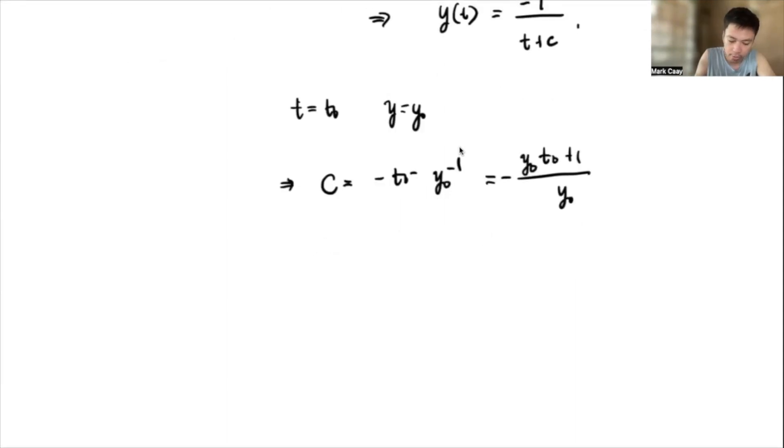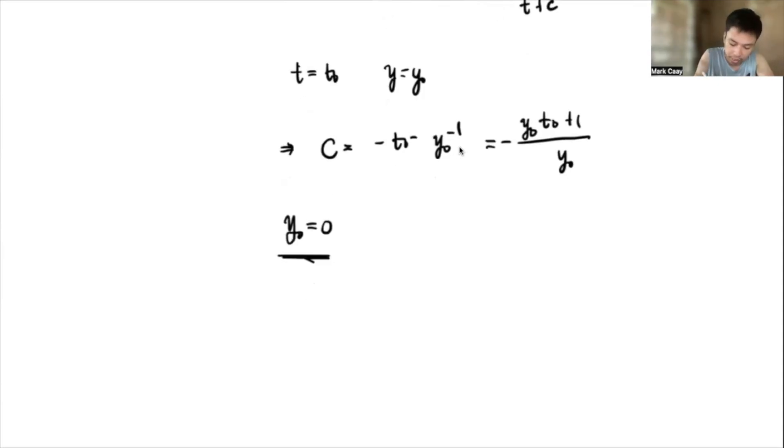So if we want to use the initial value problem, so our t equals t sub 0 and then y equals y sub 0, we find the arbitrary constant c. So in this case, our arbitrary constant c is -t₀ - y₀^(-1), which is simply the same as y₀t₀ + 1/y₀. And that's entirely negative. So observe that if we want to be interested with the fact that if y sub 0 is 0, this means that this integral curve is non-singular equilibrium solution. This means to say this will be our integral form or integral curve of the differential equation.